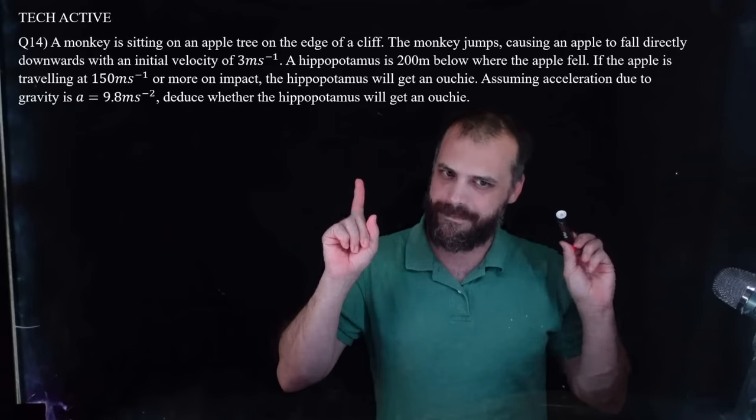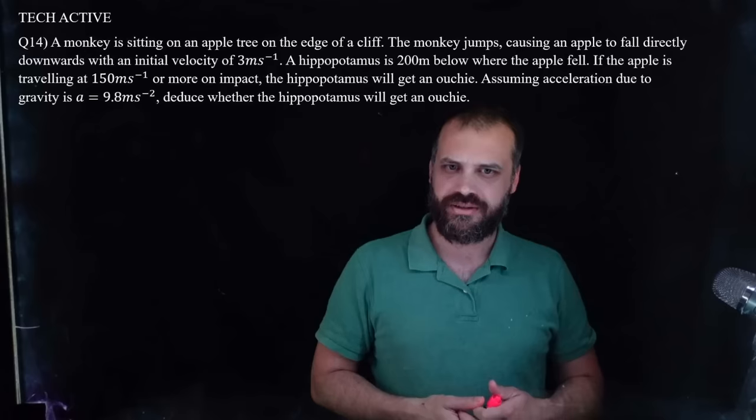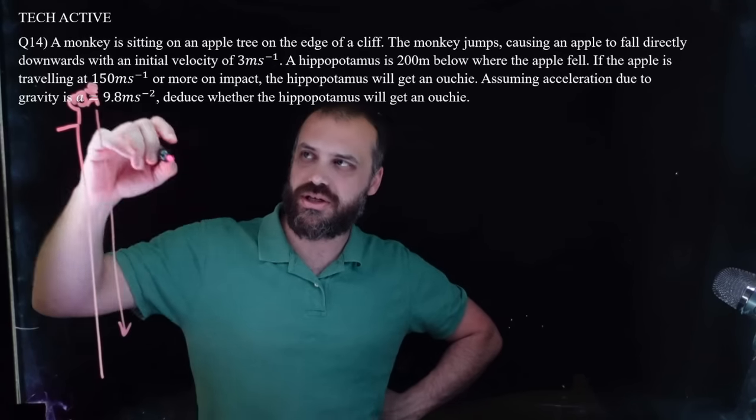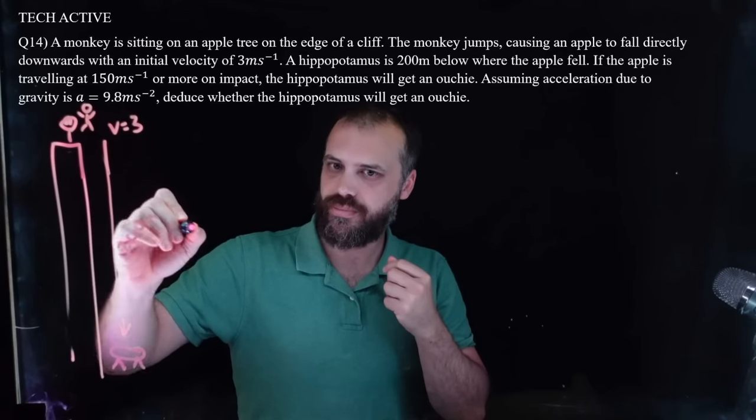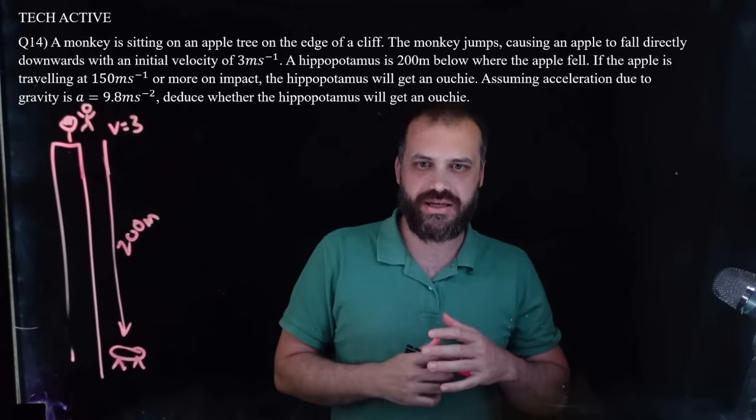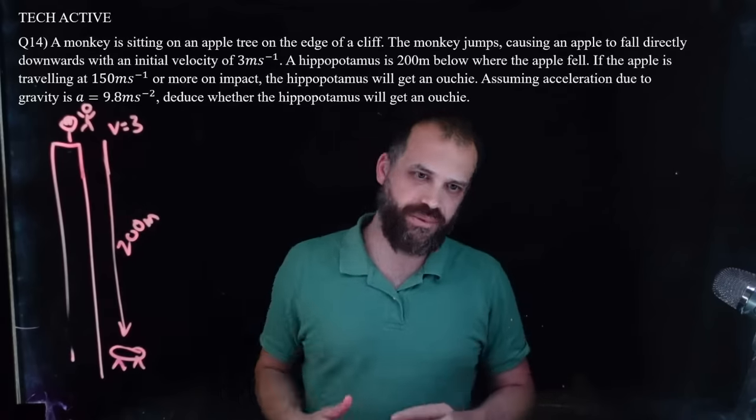Let's go. All right. Big one. Have a read. Pause it. Have a go. See what you think. I'm going to try this. Now, it's no surprise. Kind of a theme for the day. We're going to draw a picture here because there's a lot going on. So we've got a cliff, an apple tree, a monkey. Now the monkey is sitting on, the monkey jumps, the apple falls. It has an initial velocity of three. That's better. Now 200 meters below, there's a hippo. There's my hippo. 200 meters. If the apple is traveling at 150 meters per second or more, the hippo will get an ouchie. We know that gravity is accelerating this object at 9.8 meters per second per second. Let's figure out whether the hippo gets an ouchie.